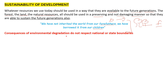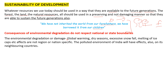Consequences of environmental degradation do not respect national or state boundaries. Environmental damage such as global warming, dry seasons, excessive snowfall, and melting of ice has effects that are not region- or boundary-specific. The polluted environment of India will affect its neighboring countries — for example, pollution from India will affect Nepal and Pakistan as well. Global warming is not the problem of only one country; if ice caps melt, it will harm multiple countries. So environmental degradation has its effects felt across national boundaries.